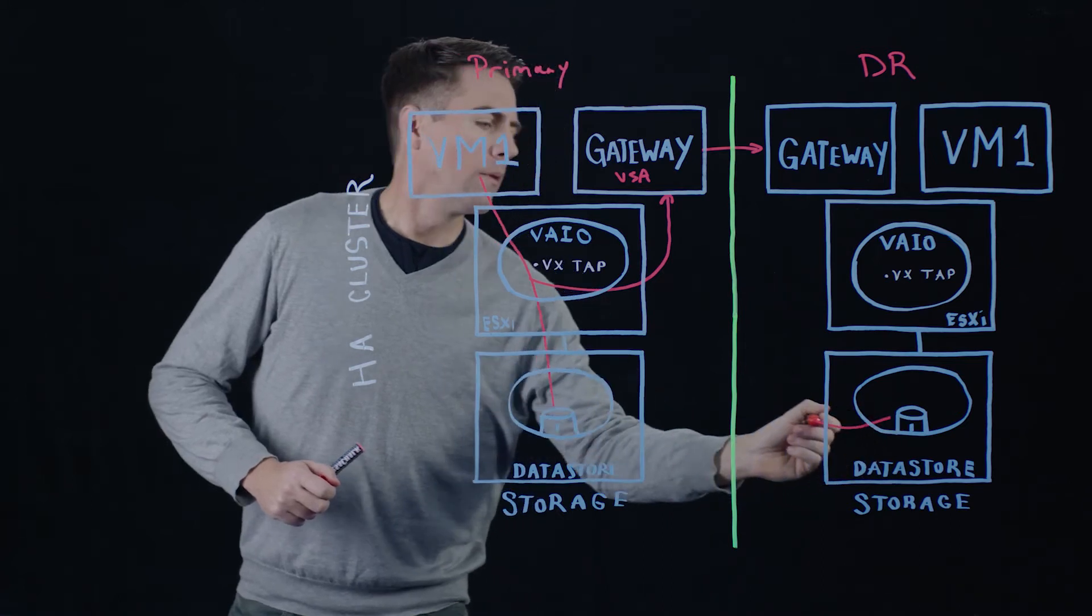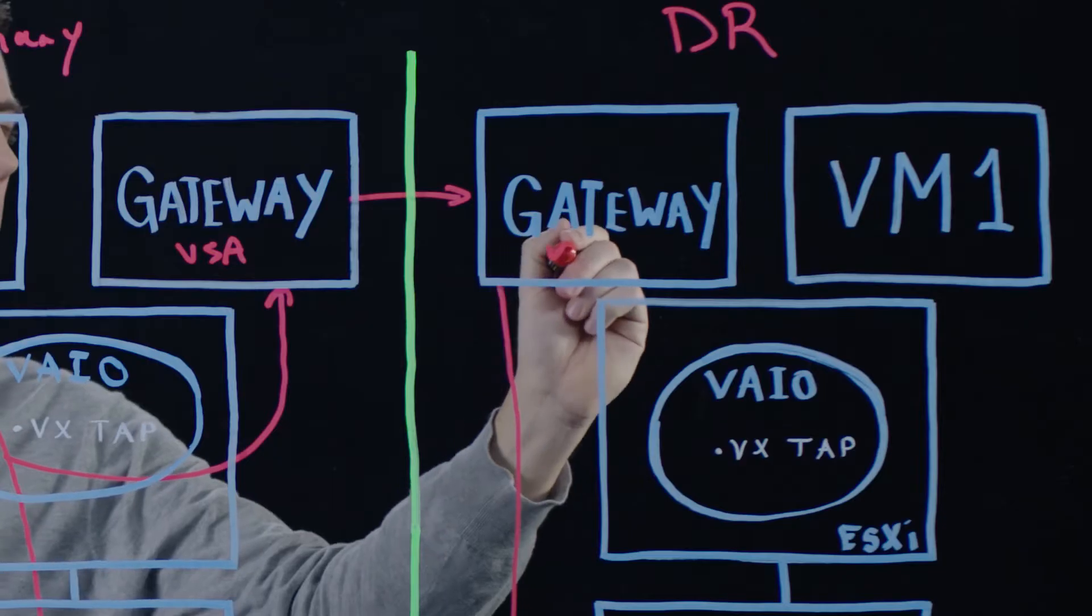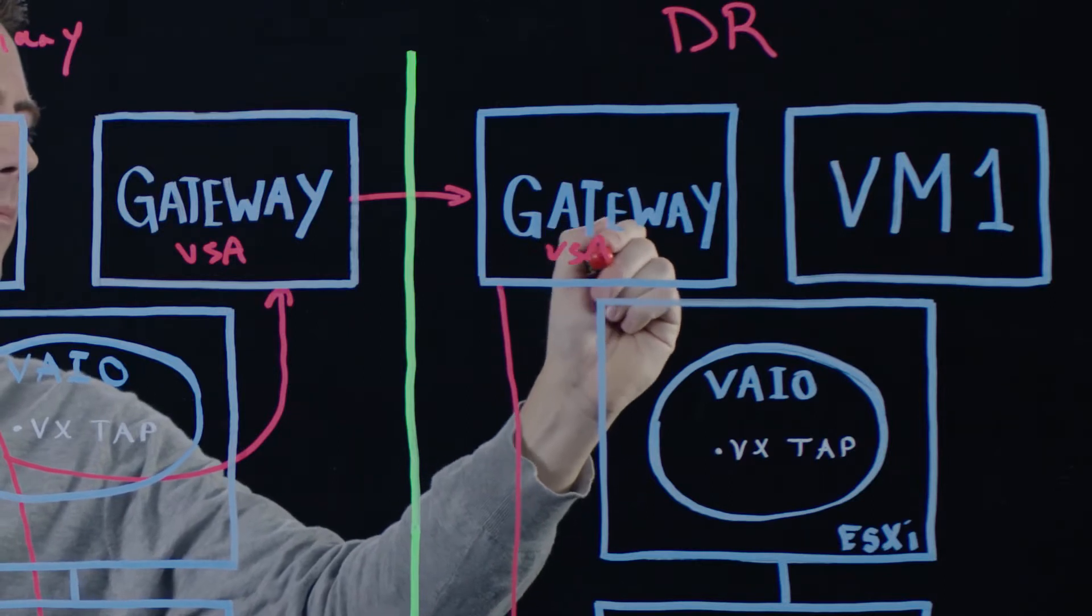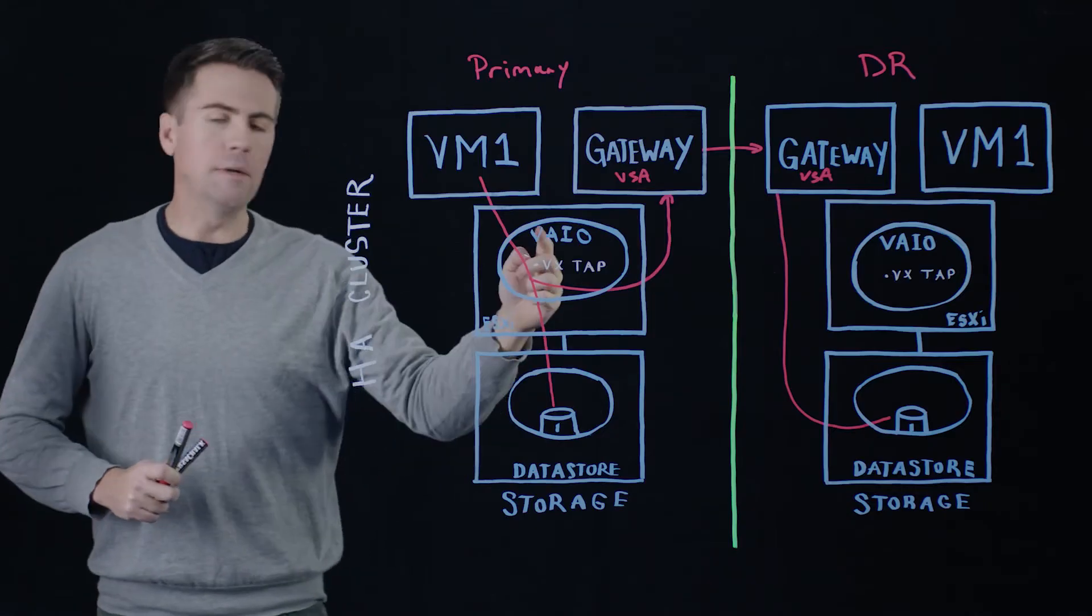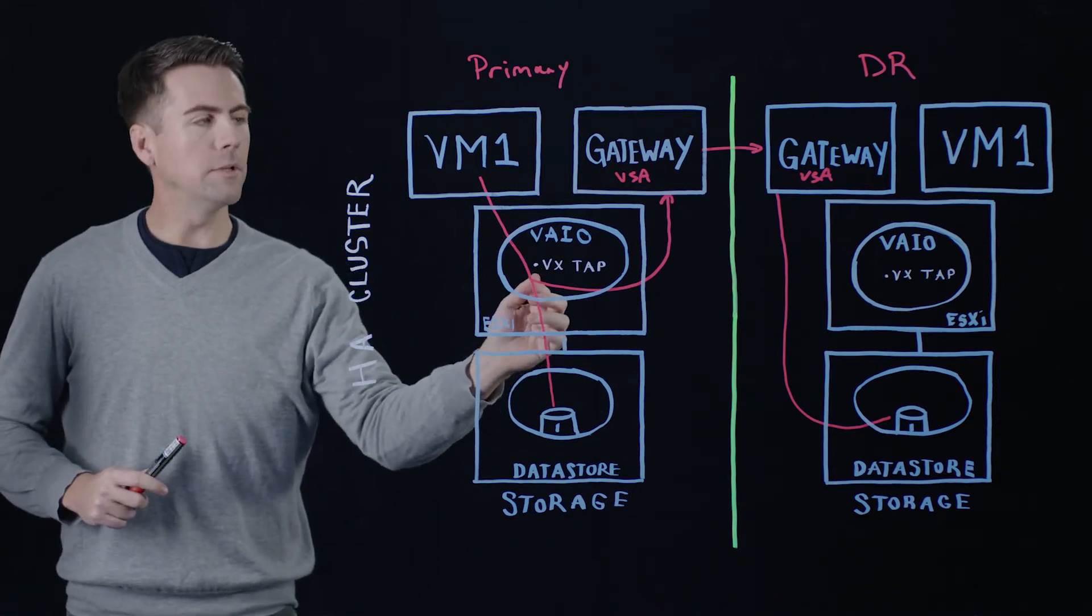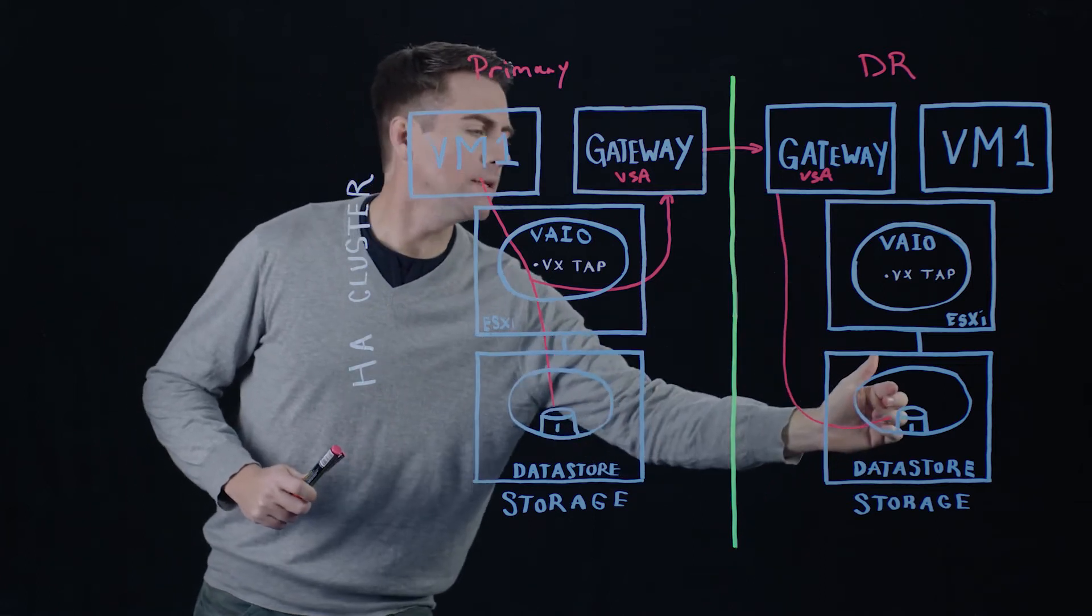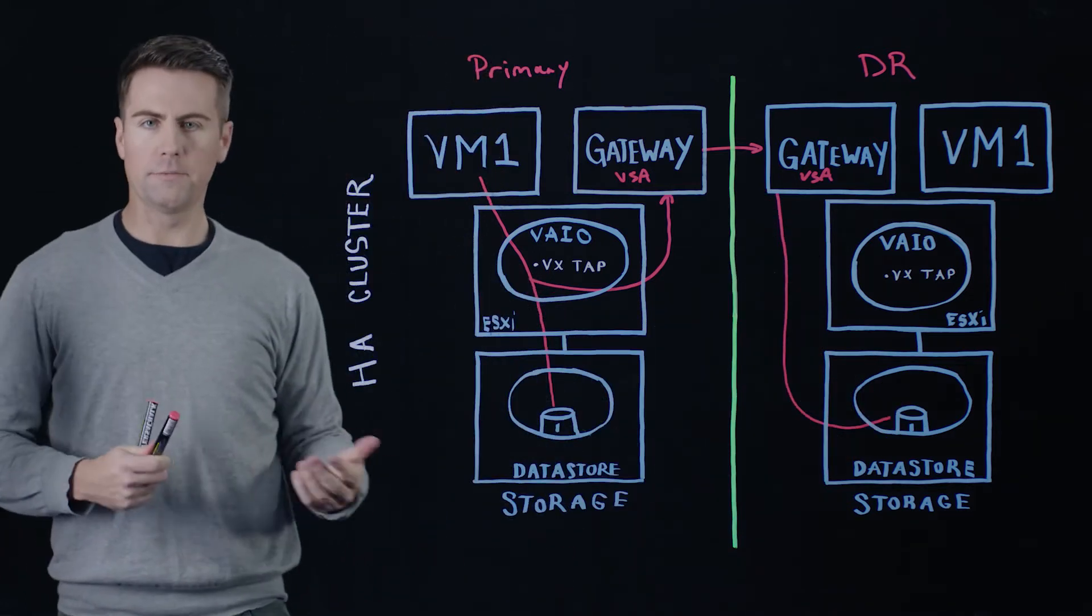Now over here we have a disk that's connected to this gateway. And the data stream coming from our primary site that's being tapped right here at the hypervisor level that gets sent up to our gateway and then replicated down on this site to our local disk is essentially how the process flows.